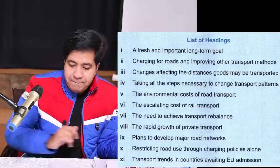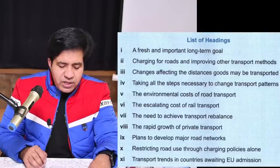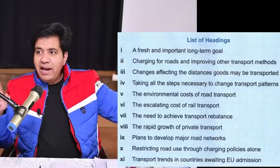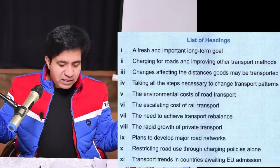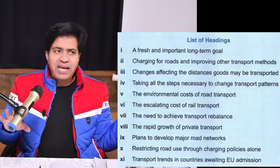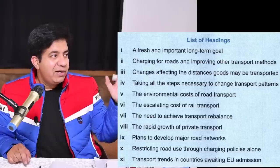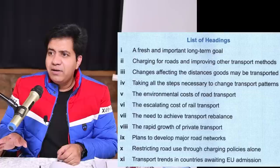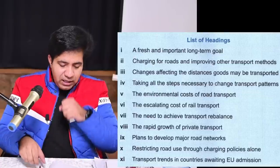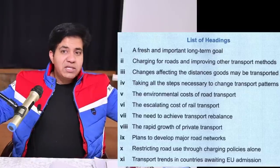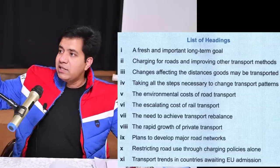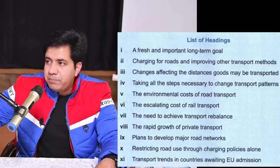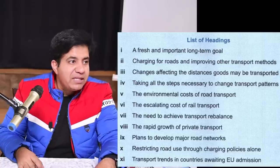Heading number two: 'Charging for roads and improving other transport methods.' Whenever there is a heading with 'and,' be very careful — sometimes they mention only the first thing in a trap heading. The headings list usually has two extra headings which are traps — headings that seem to fit anywhere. For heading two, charging means paying a fee to enter a city center, and other transport methods include bicycles and trams. Heading number three: 'Changes affecting the distance goods may be transported' — so goods transport and distance are key.